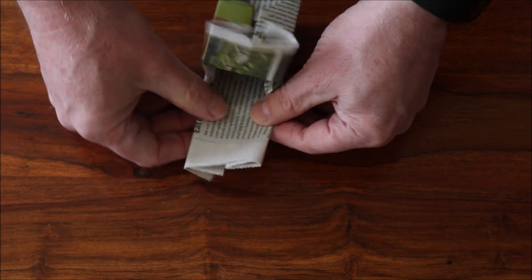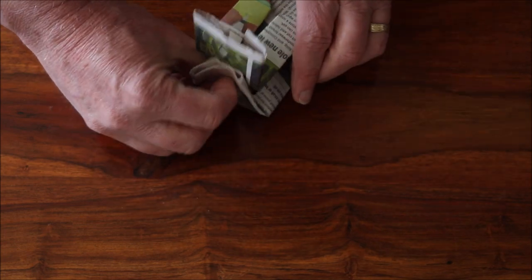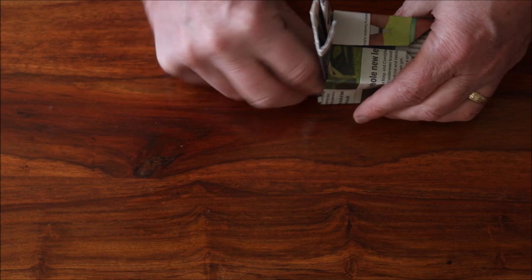Fold two flaps inside the pot, these will be held in place later when we add the soil.